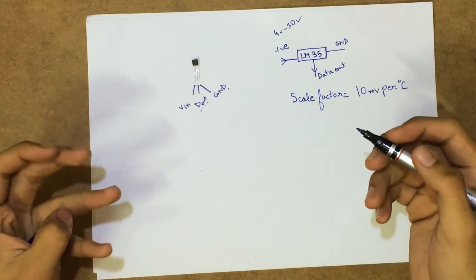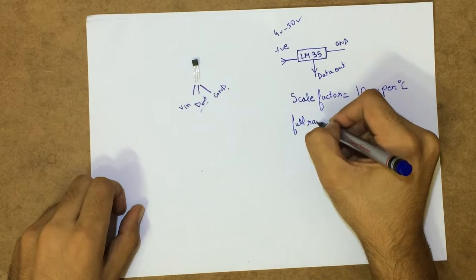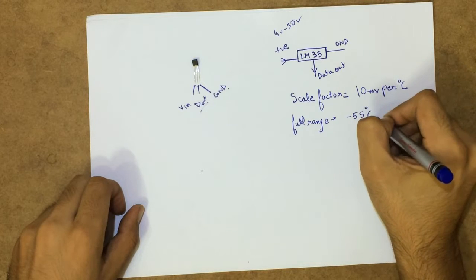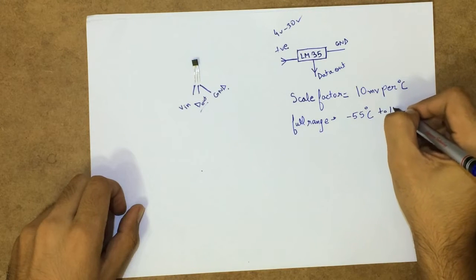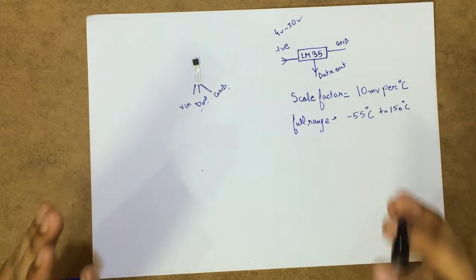So the full range of this device to measure the temperature is minus 55 degree C to 150 degree C. And trust me, it is very, very, very precise.